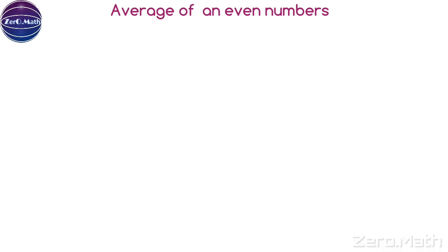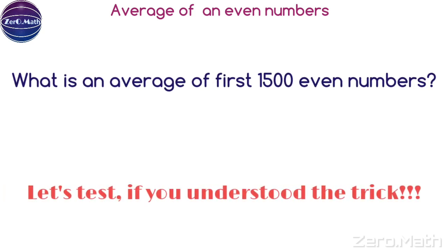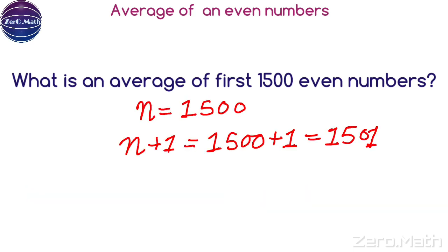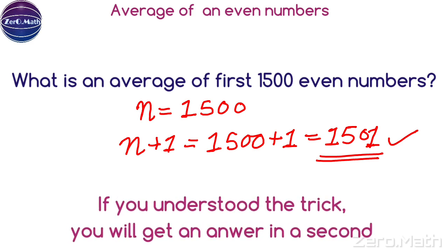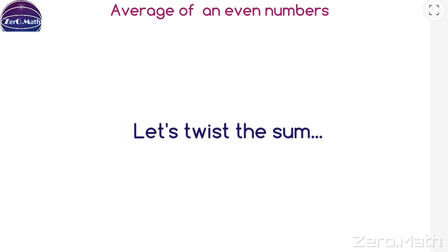Find the average of the first 1500 even numbers. It is very simple: 1500 + 1 = 1501. You should not take more than a second to solve this kind of sum during an examination. Now let us twist the problem: find the average of even numbers from 1 to 100.